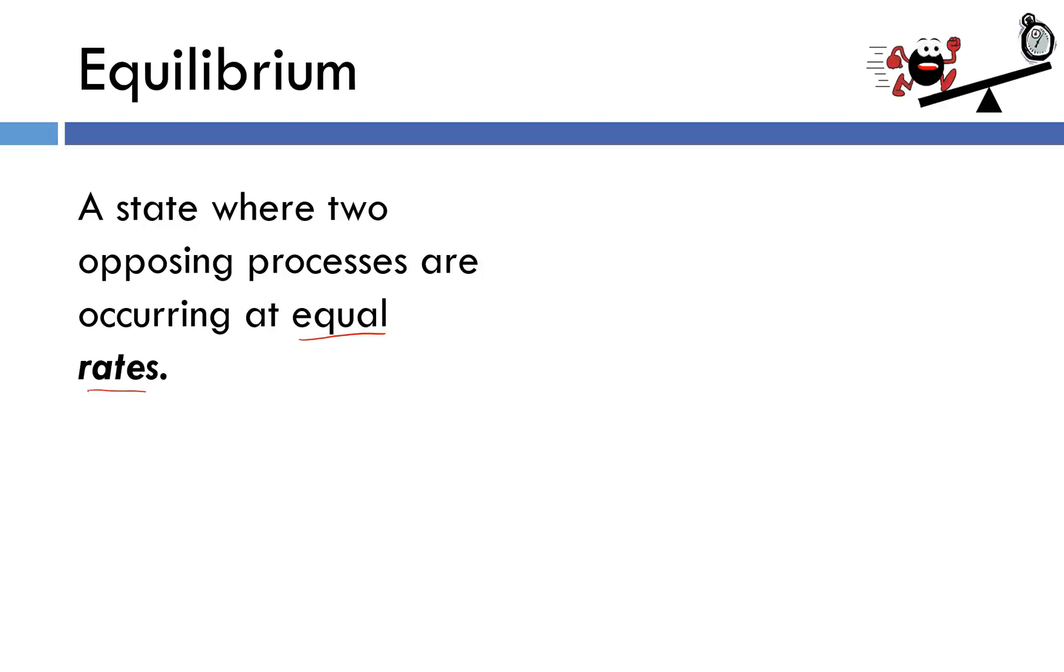Every system that's at equilibrium, whether it is chemical or physical in nature, will have two processes that are the opposite of one another. These processes are going to occur at equal rates or at equal speeds.